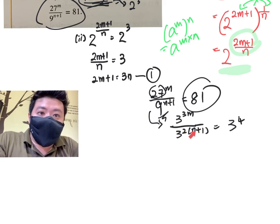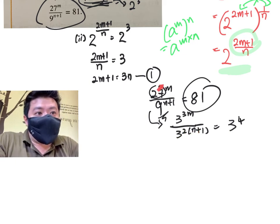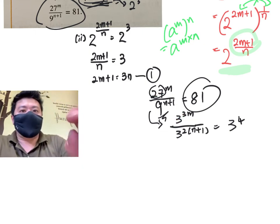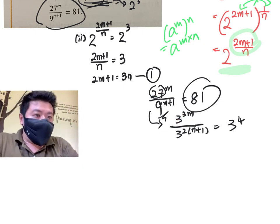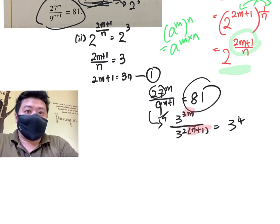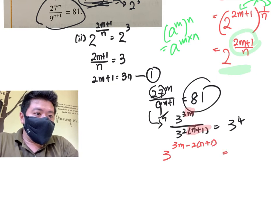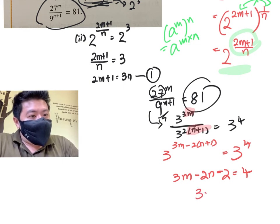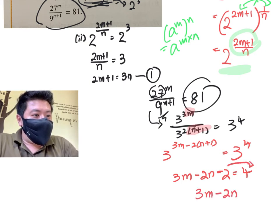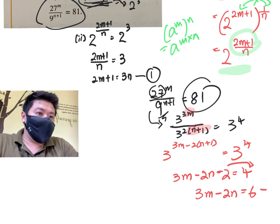And it's 3 power 2 times n plus 1. So do not go and put 2m plus 1. It's actually 2n plus 2. 27 is 3 power 3, 3 times m is 3m. With that, combine 3m and 2 bracket n plus 1. This will give you 3 to the power of m minus 2 bracket n plus 1 equals 3 to the power of 4. That gives you 3m minus 2n minus 2 equals 4, so 3m minus 2n equals 6. That's equation 2.